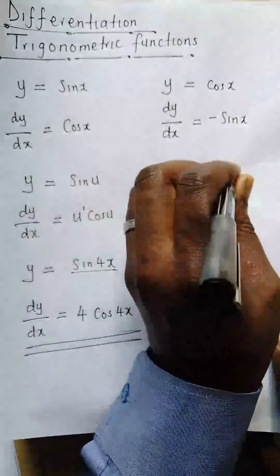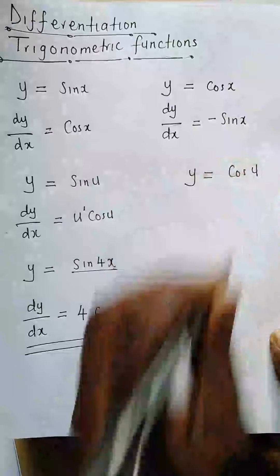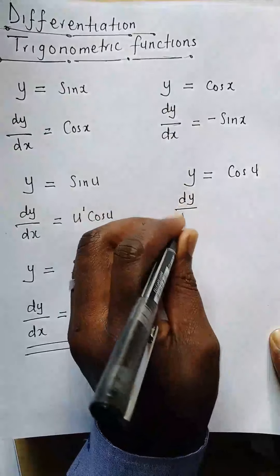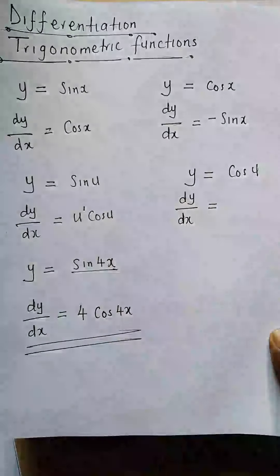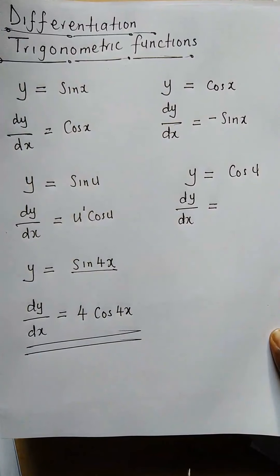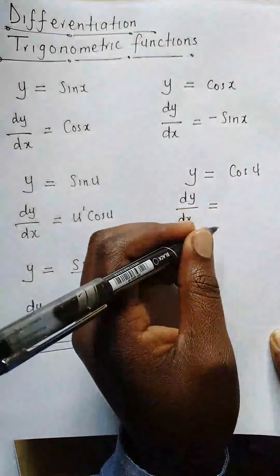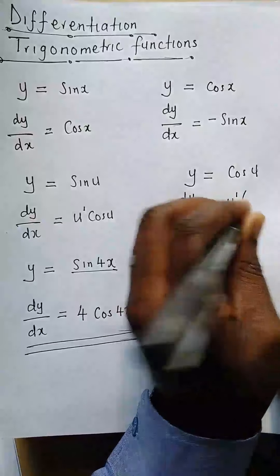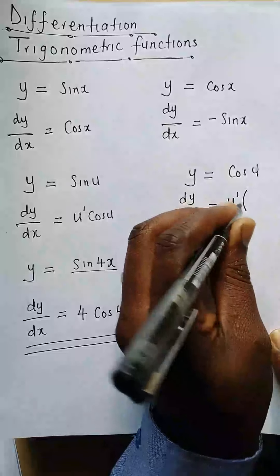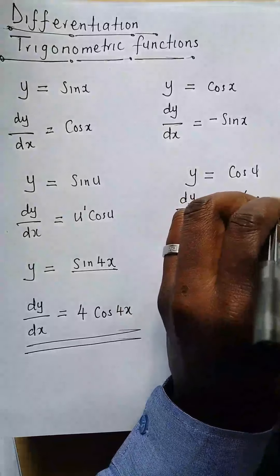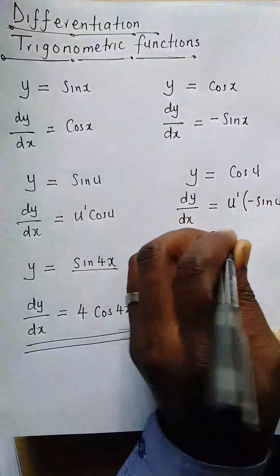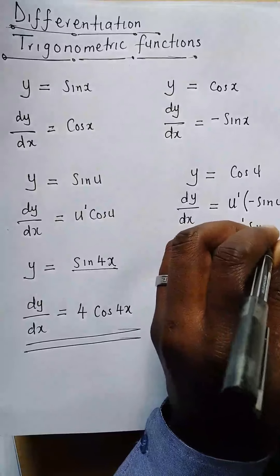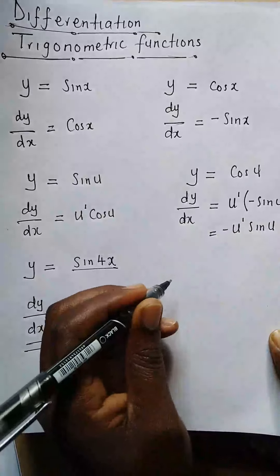On the other hand, if we have y = cos(u), where u is a function of x, how do we find dy/dx? We differentiate u first, giving u', and then the derivative of the whole thing is negative sin(u). So dy/dx = negative u'·sin(u).